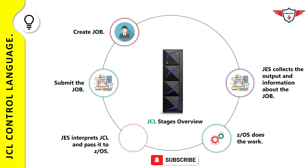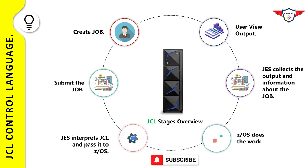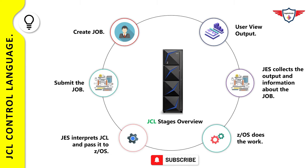In the output phase, once the job is completed, JES2 collects the output and sends it to print based on output class and device setup. In the last phase, the user can view the output in a spool. The output can be a report, a new dataset, or a database update — that depends on the business requirement. In this example, the monthly tax report will be available in the spool because we do not want to print on an actual printer.